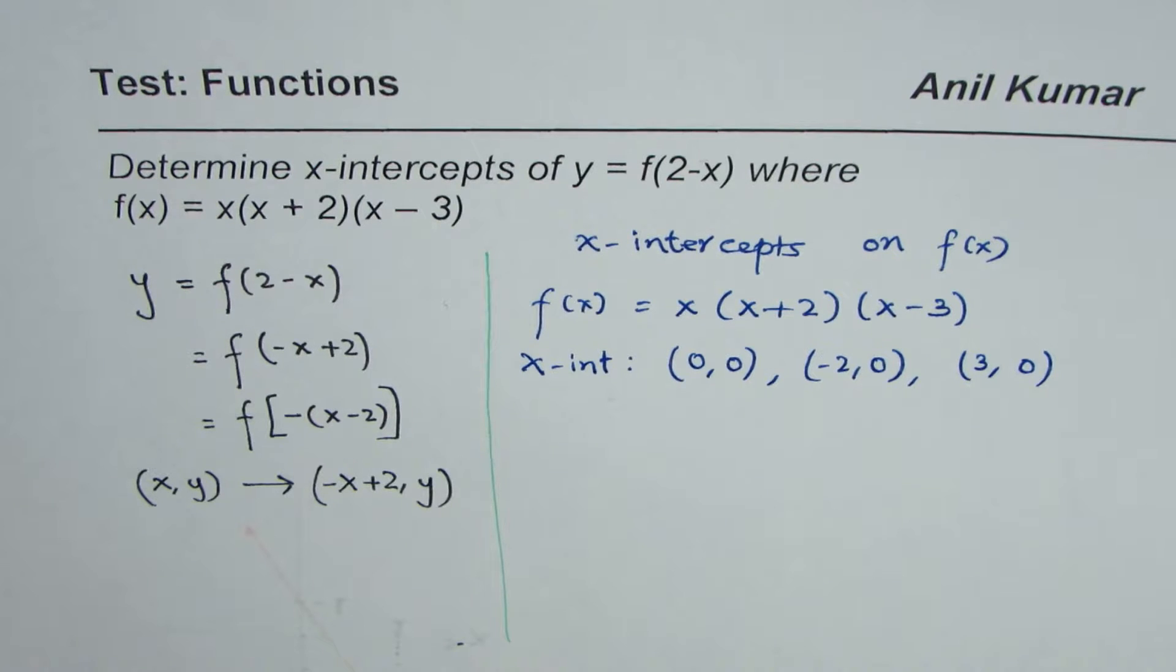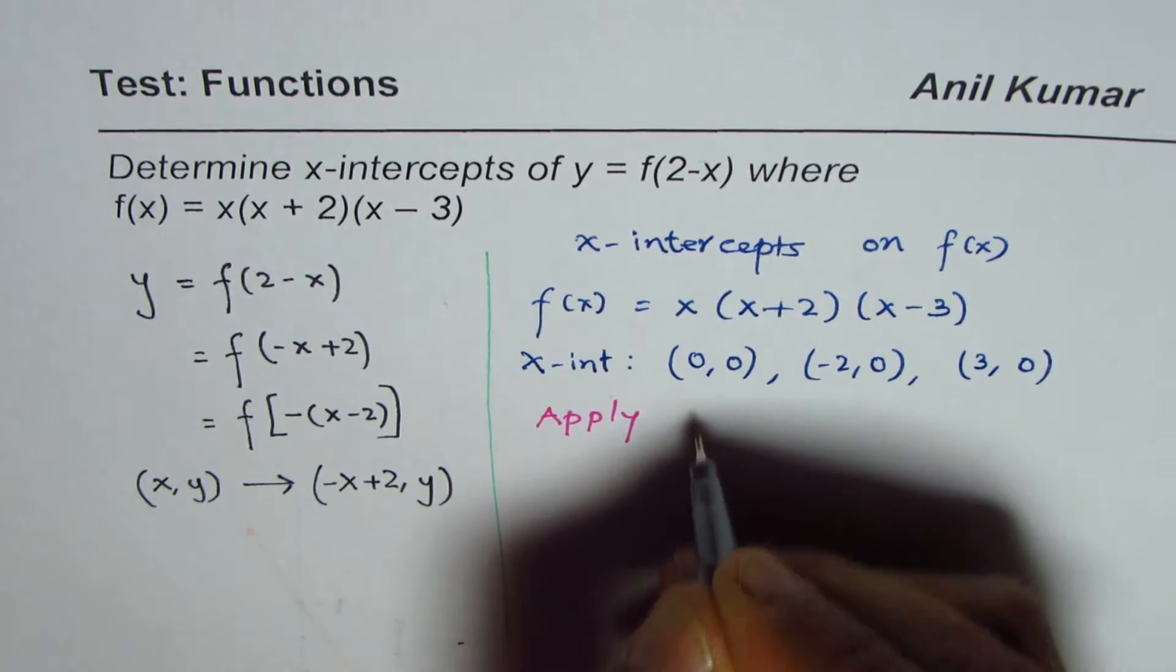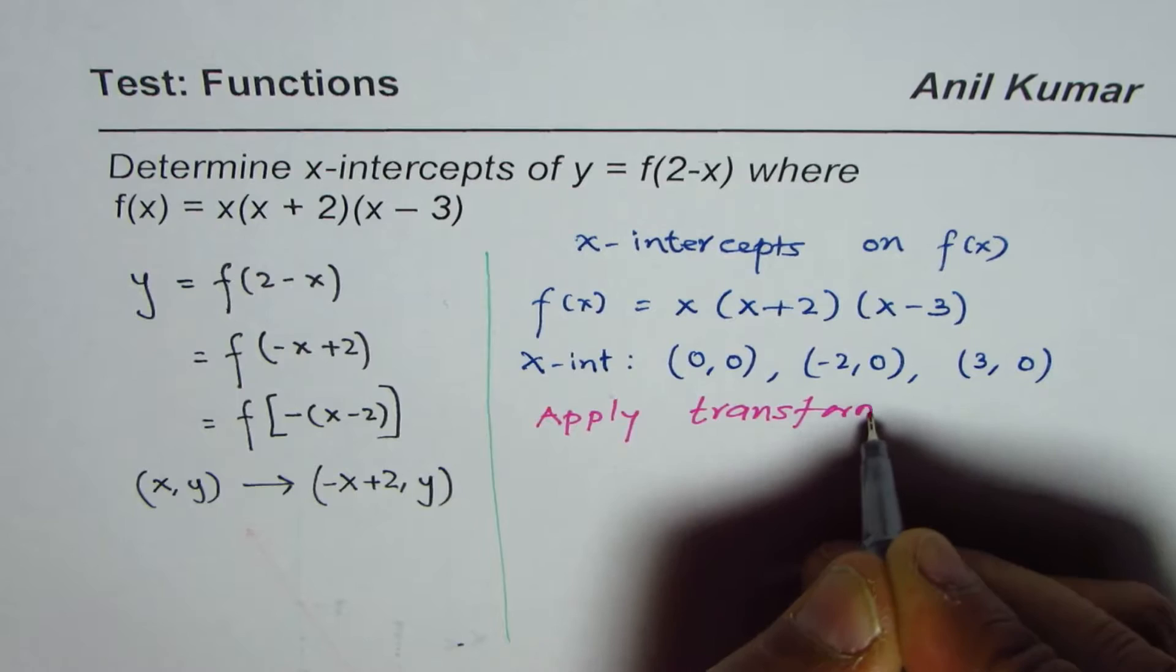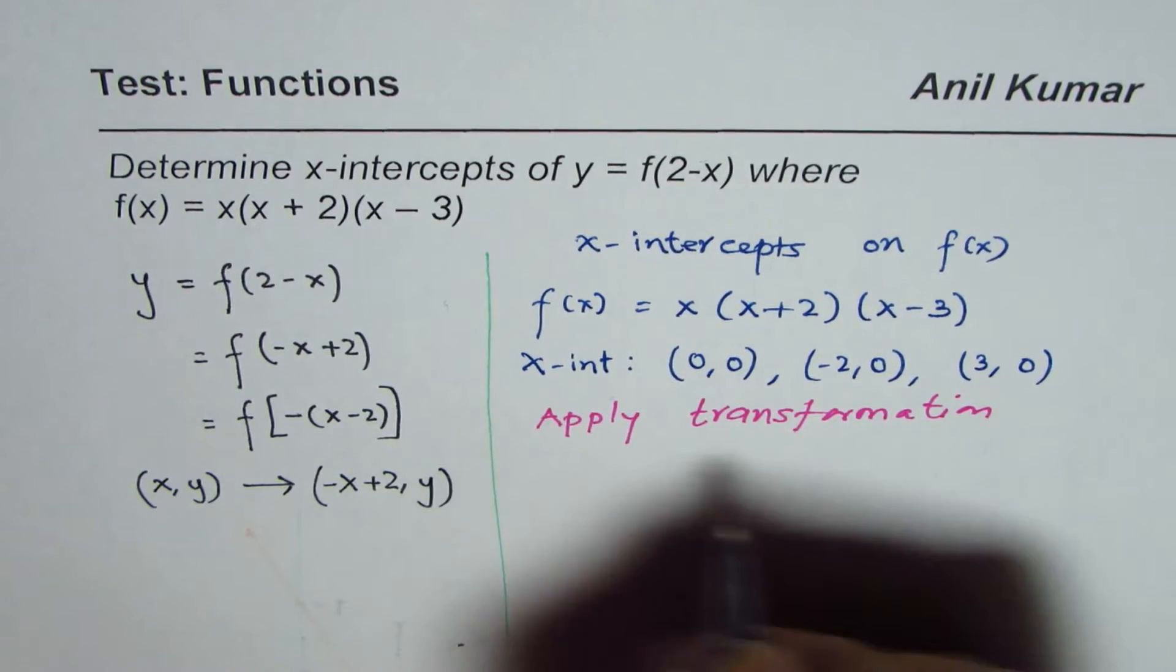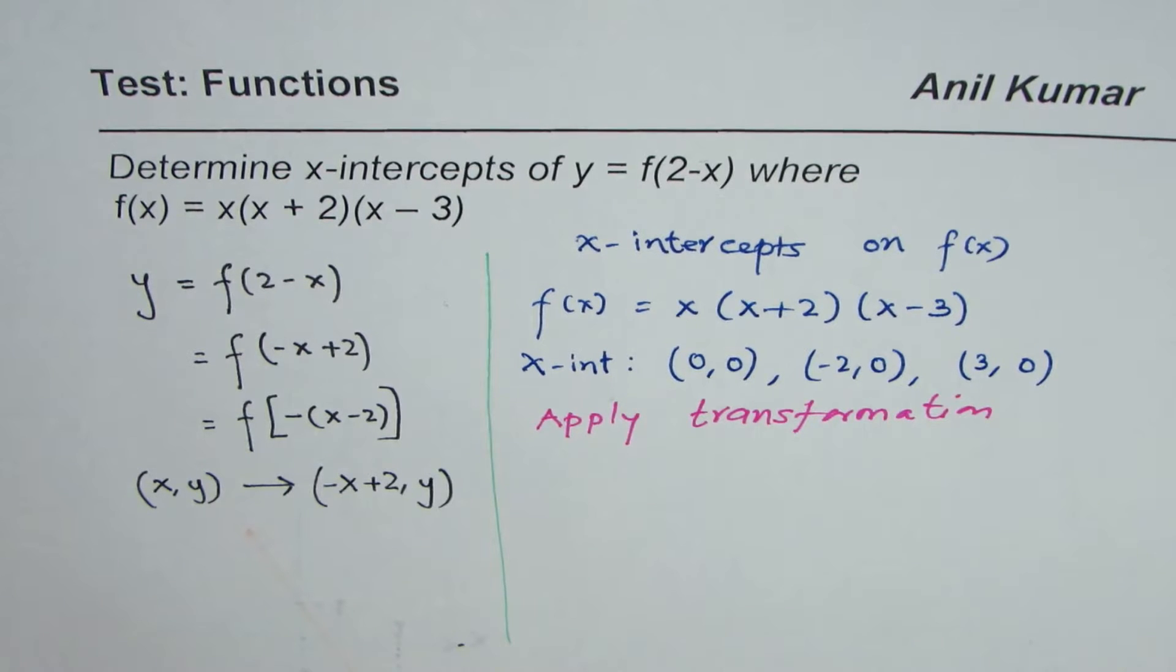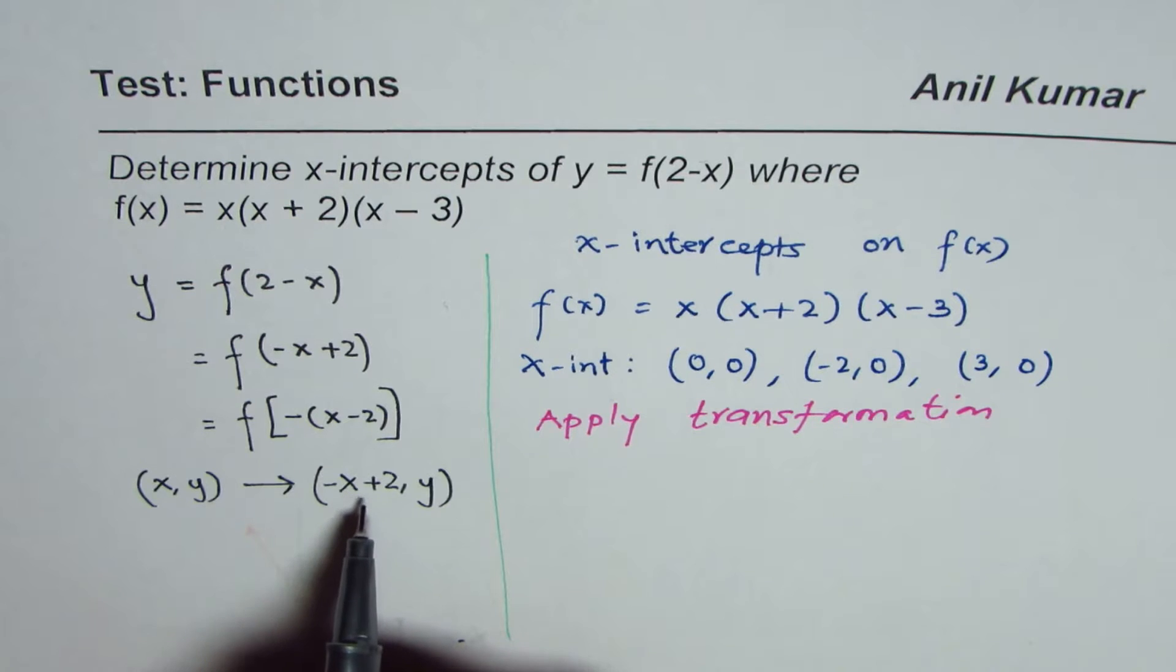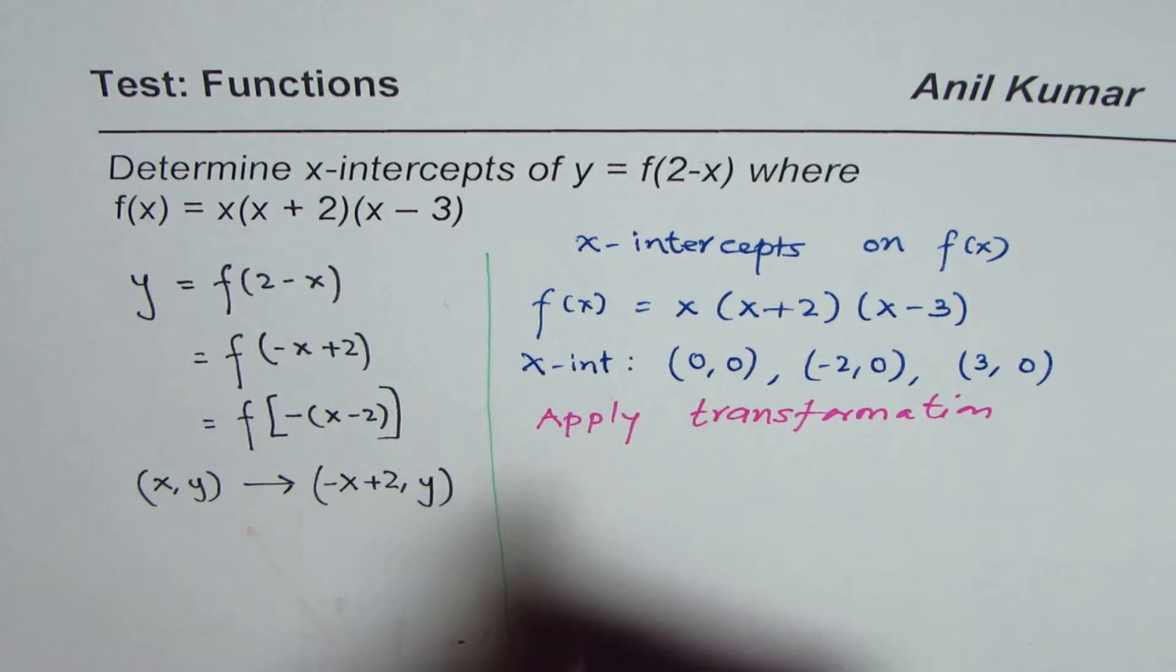Applying the transformations, now let us apply transformations. So apply transformation to find x-intercepts on y. So when you do that, what do you get? x values become negative of x plus 2, y-coordinates remain the same.